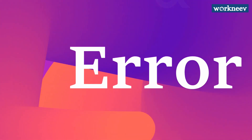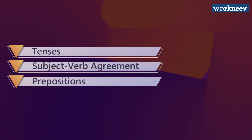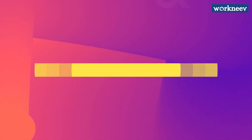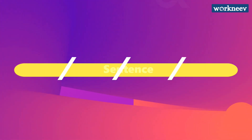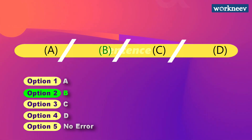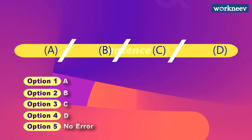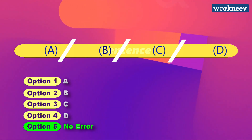To identify the error you should be familiar with some basic grammar rules like tenses, subject-verb agreement, prepositions, articles, etc. The statement will be divided into parts and the error will be in one of the parts. Each piece of the sentence will be labeled with a letter. You must select the letter representing the part with the error. If there is no error, then the last option — 'no error' — is the answer.